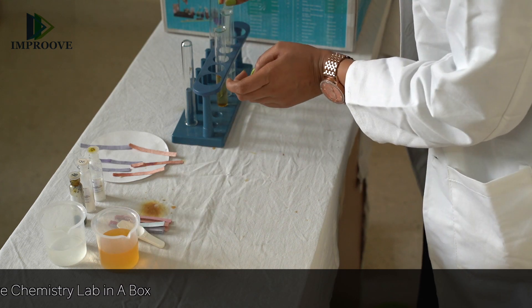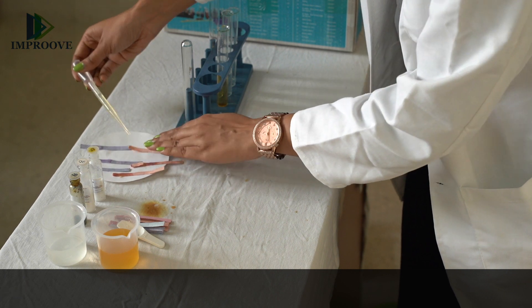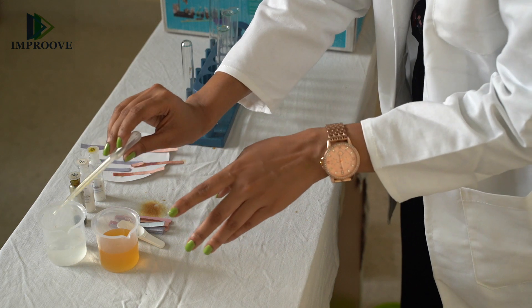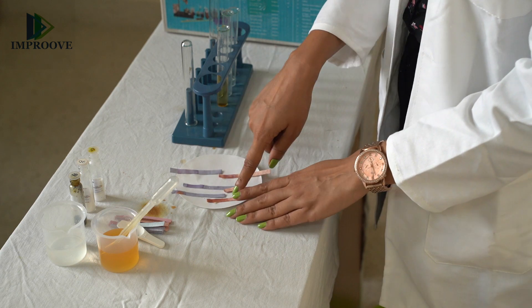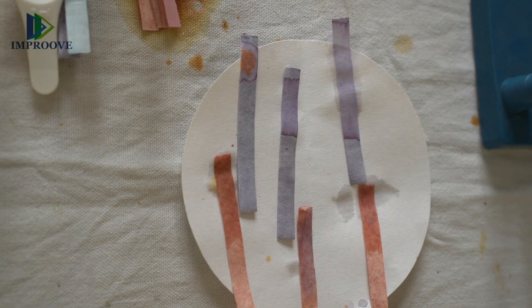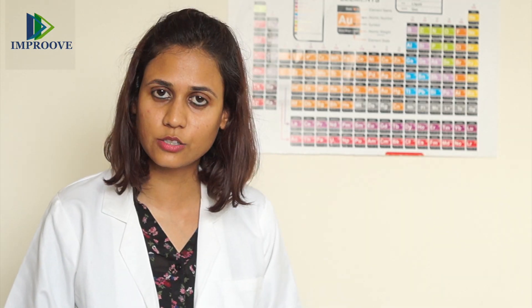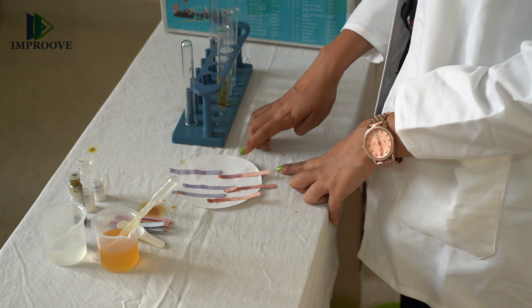You will observe that as soon as the ferric chloride solution was poured on the blue litmus paper, it changed color to red, but had no effect on red litmus paper. The sodium acetate solution had no effect on blue litmus paper but turned red litmus paper slightly blue. The sodium chloride solution showed no effect on either blue or red litmus paper.